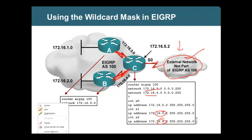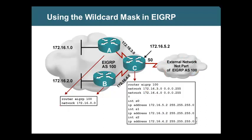If you don't put the wildcard mask, EIGRP would advertise routes to the external network. Anything sent via multicast address would go to the external network even if there is no neighbor. To prevent that, we use the wildcard mask. In RIP there is no wildcard mask, but in EIGRP we do have a wildcard mask which helps us filter.